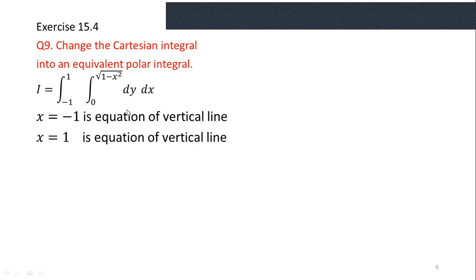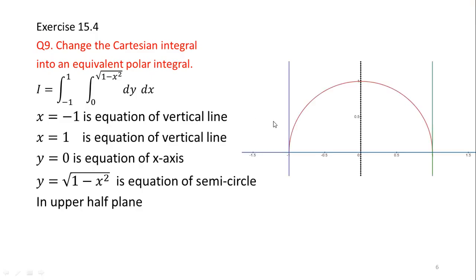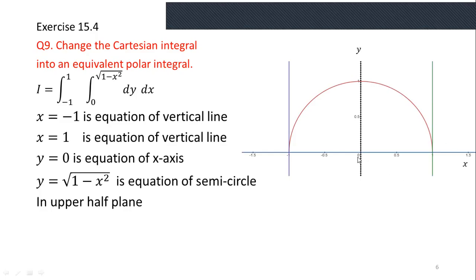The limits of x are −1 and 1, where x = −1 is a vertical line and x = 1 is a vertical line passing through the point where x equals one along the x-axis. y = 0 is the equation of the x-axis, and y = √(1 − x²) is the equation of a semicircle with radius 1 and center at the origin in the upper half-plane. Since the y-axis is not involved in my boundary I have made it dotted to avoid confusion.